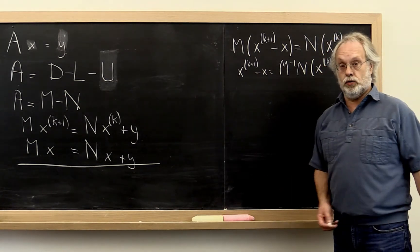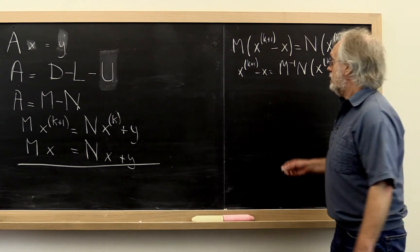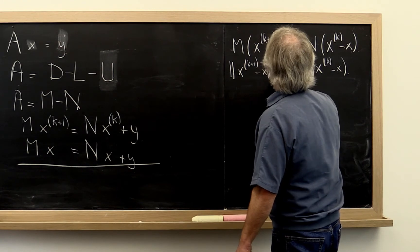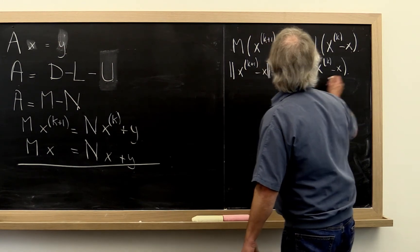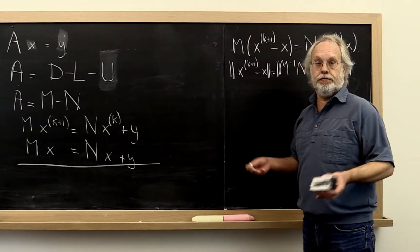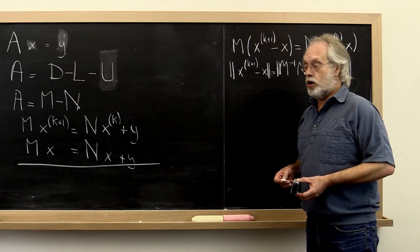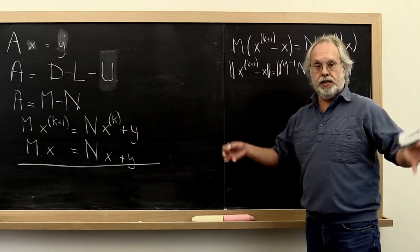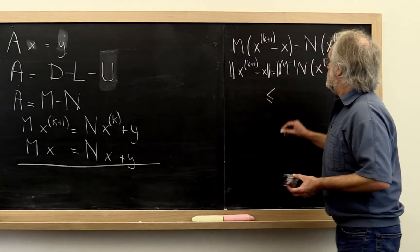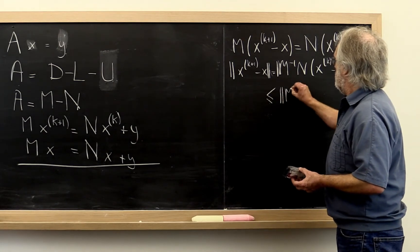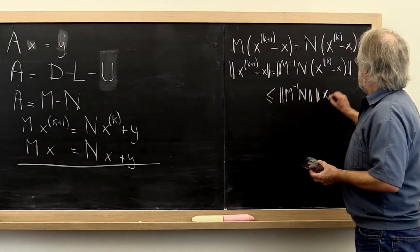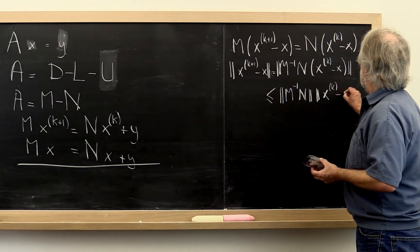And then we can take norms. Because we know that the norm of this is just equal to the norm of this. And then if we use a submultiplicative matrix norm or a subordinate matrix norm, then we know that this is less than or equal to M inverse N times X_k minus X.